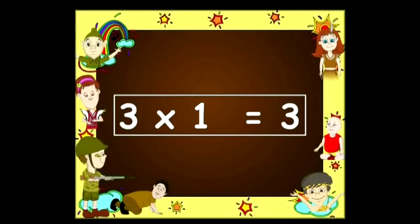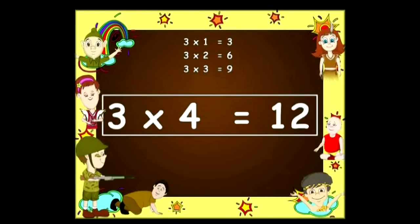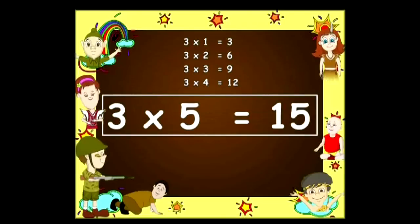Three ones are three, three twos are six, three threes are nine, and three fours are twelve.